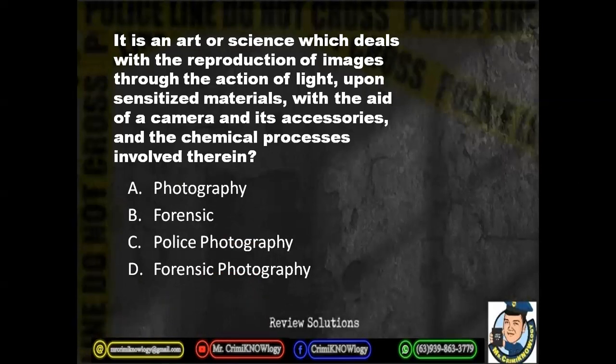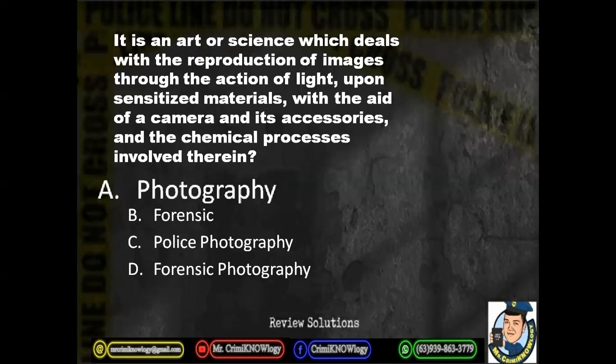Hope you have your answer. The correct answer is photography. Generally, photography is an art or science — art because we need skill, science because we have a system of processes in the reproduction of images. The elements include the action of light, the aid of a camera which is the equipment, and the sensitized material which is the film and photographic paper, along with the camera's different accessories.